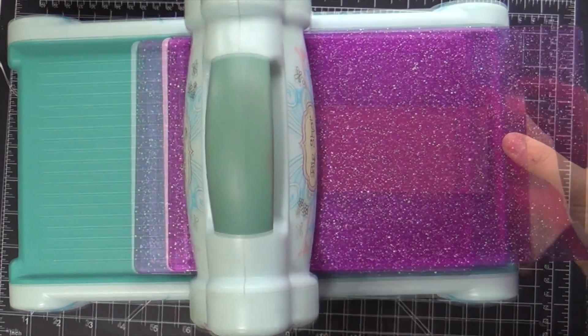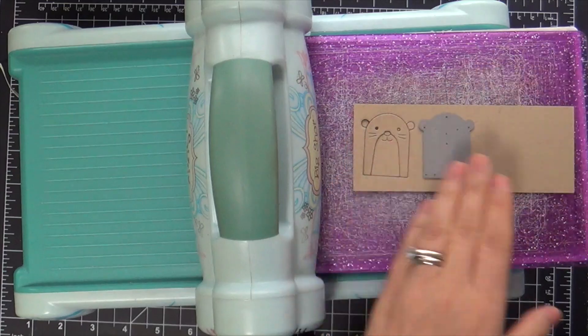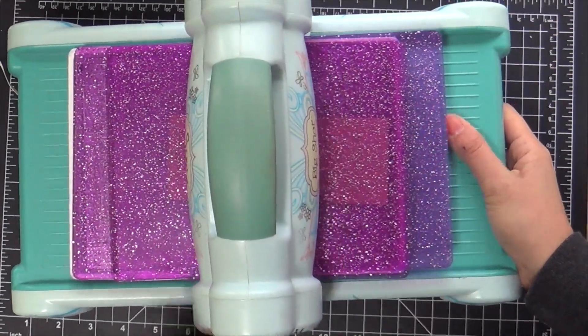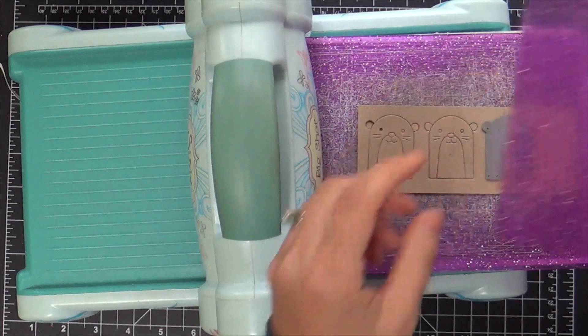Sometimes you just don't know what to do with smaller images like for example this otter. What are you going to do? Slap them right in the middle of a card base? He could get lost and you don't want the otter to get lost and you certainly don't want the otter to be lonely either.